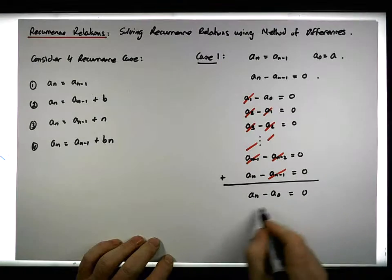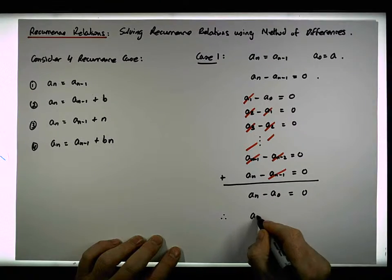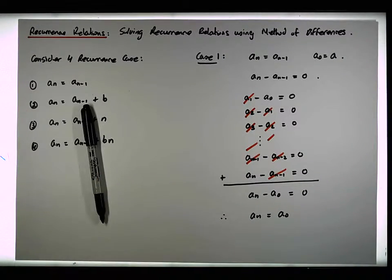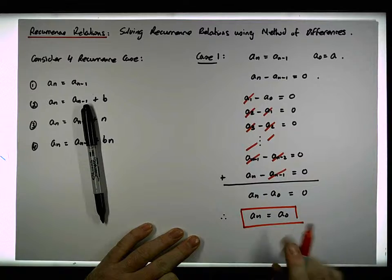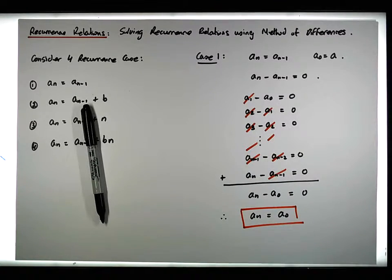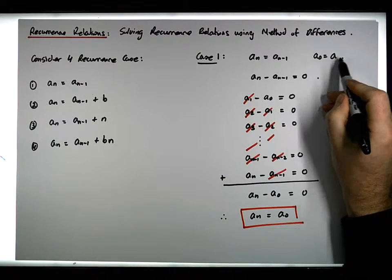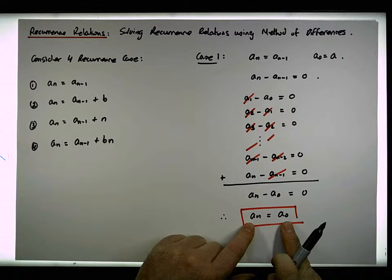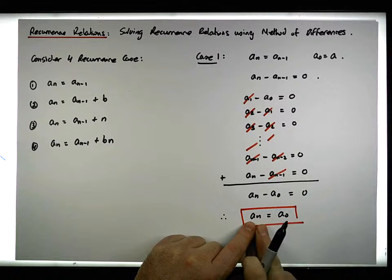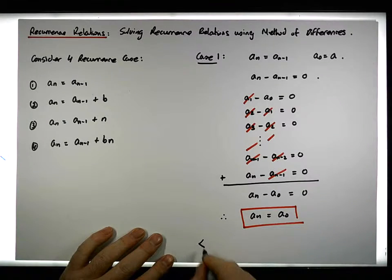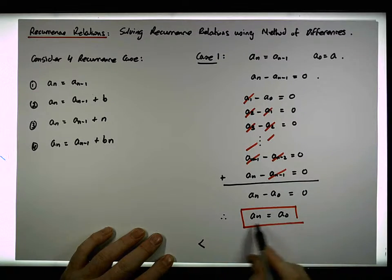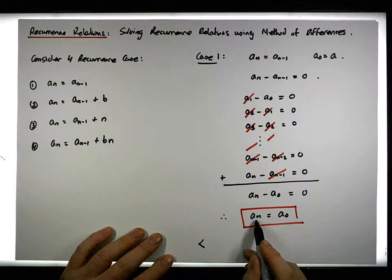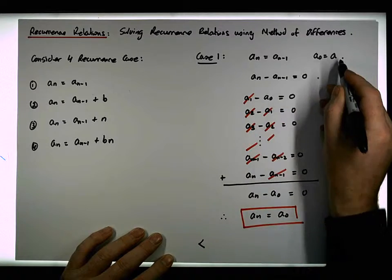Effectively what we have is that a_n must be equal to a_0, which is the closed form solution to this particular type of recurrence. So the first term at a_0 is simply equal to a_0.